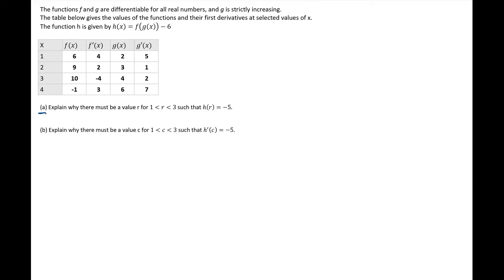In part A, we are asked to explain why there must be a value r, for r greater than 1 and less than 3, such that h of r is equal to negative 5. So we're not going to be able to strictly use the values in the table. Instead, we're going to have to look at our h of x function, which is the composition function. We need to show that h has to have a y-value of negative 5 somewhere between 1 and 3.